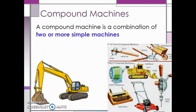Some other examples of compound machines in history were a stone axe, which is a combination of a wedge and a lever; shears, which are a combination of wedges and levers; and wheelbarrows, which have levers as handles and a wheel and axle.